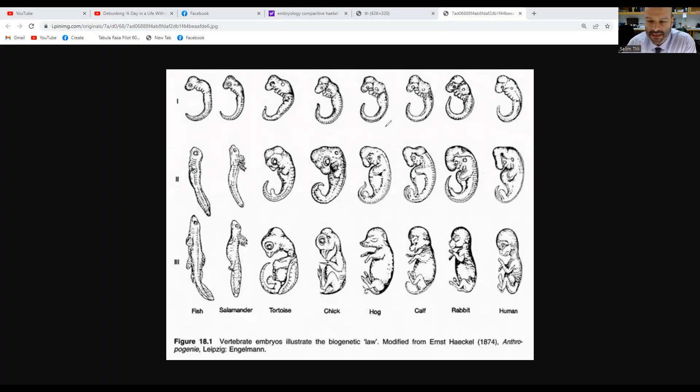His name was Ernst Haeckel and his images are sketches of embryos of these eight animals. Now embryos are the fusion of sperm and egg, these are all sexually reproducing organisms.